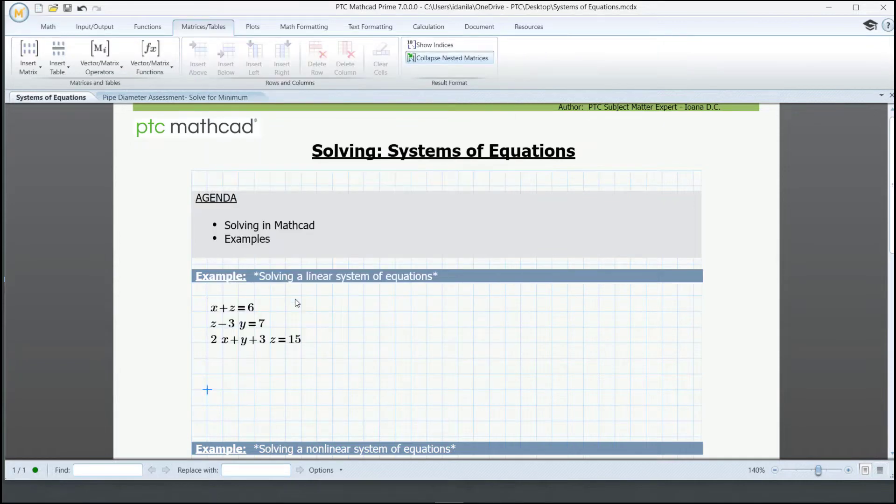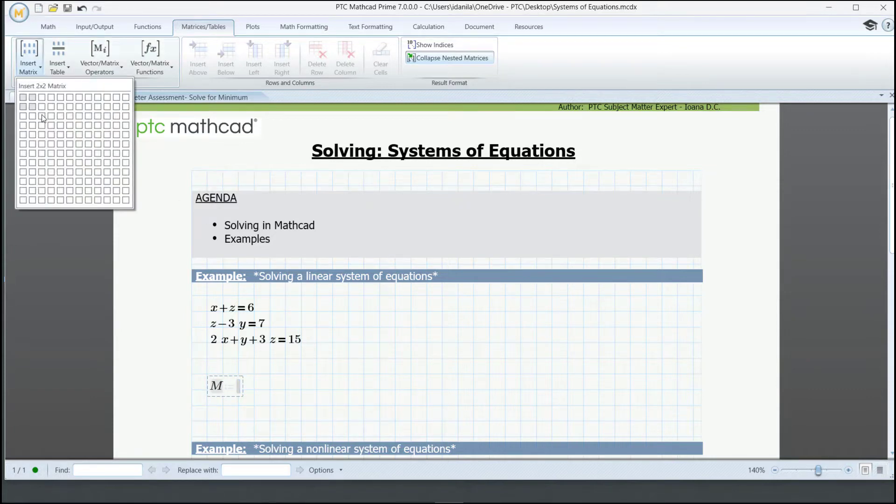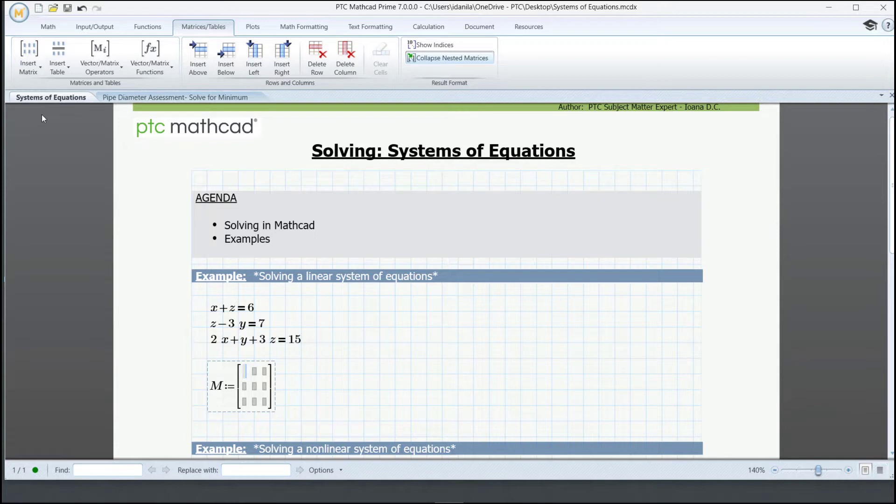In order to find the solutions, we need to define the coefficients matrix. We define M and insert a 3 by 3 matrix and insert our corresponding values for our equations. For the first one, these will be 1 for x, 0 for y, and 1 for z. For the second, these are 0, minus 3, and 1. And for the third one, 2, 1, and 3.